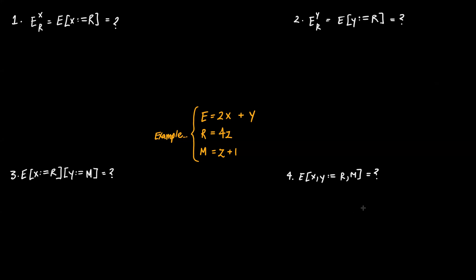Let's do some examples to illustrate the concept of textual substitution. In the first problem, we want to take all occurrences of X and replace them with R in the expression E. This notation is equivalent to the other notation. The first step is to replace all of the placeholders in the question with the known expressions. We know E is 2X plus Y, and we are taking all occurrences of X and replacing them with R, where R is 4Z.